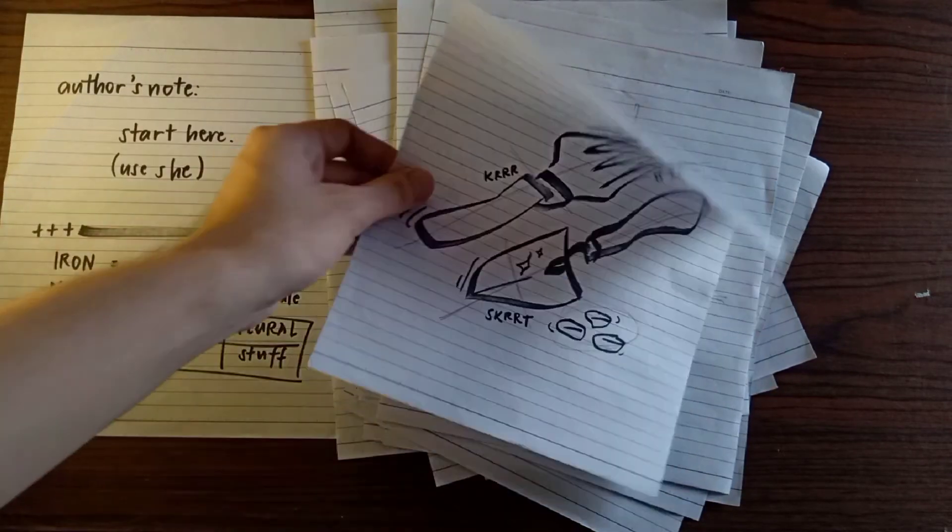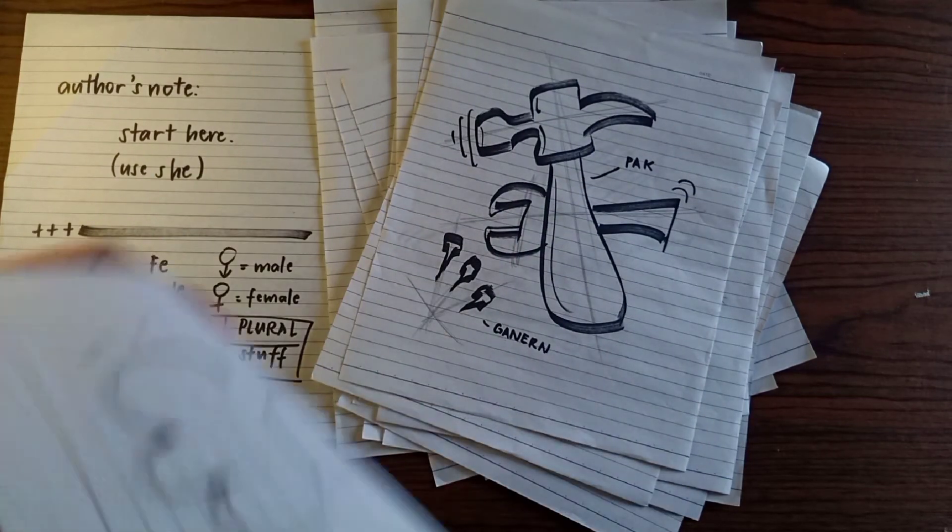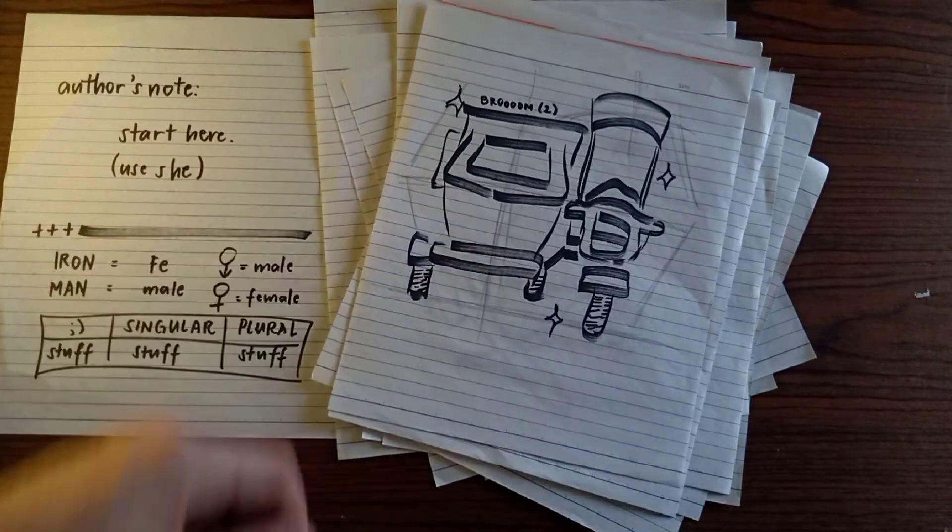She can be a gardener at eight, a carpenter at nine, a cook during the day, and a tricycle driver at night.